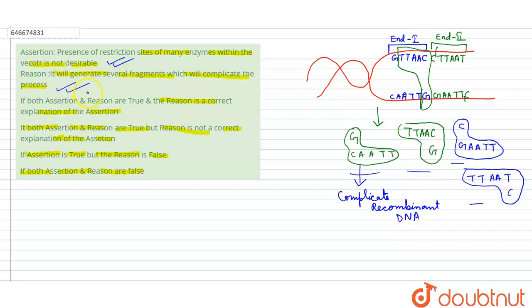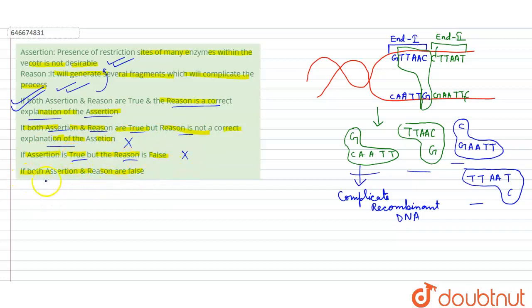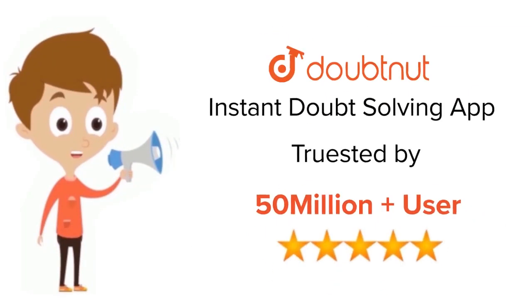The reason is also the correct explanation of why the assertion is given. So both assertion and reason are true and reason is a correct explanation of the assertion — that is Option A. Option B, assertion and reason true but reason is not a correct explanation, is wrong. Reason is not false, and both are not false. So Option A will be the answer. Thank you very much.